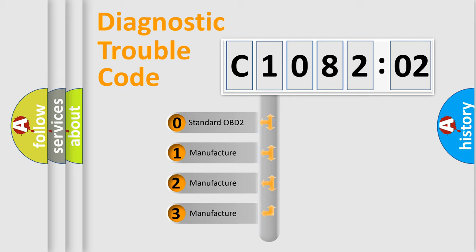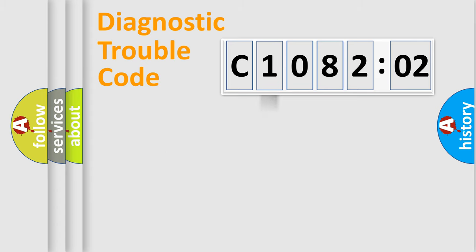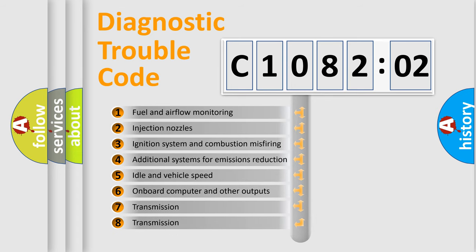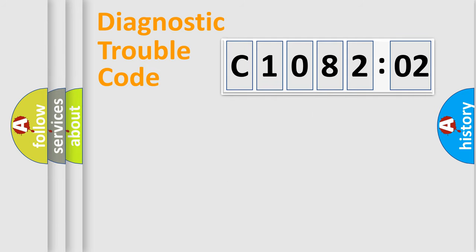If the second character is expressed as zero, it is a standardized error. In the case of numbers 1, 2, or 3, it is a manufacturer-specific expression of the car-specific error. The third character specifies a subset of errors. The distribution shown is valid only for the standardized DTC code. Only the last two characters define the specific fault of the group.